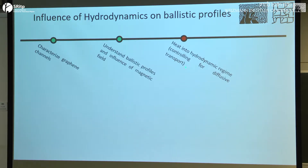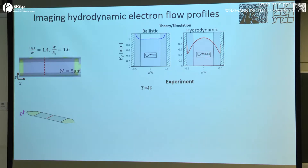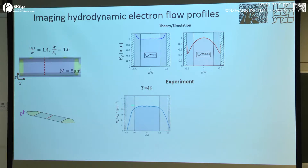Now we're ready to heat into the hydrodynamic regime and see if we actually observe what we expect experimentally. This is the theory for EY — what we actually measure — first at four Kelvin. The parameters are LMR over W equals 1.4, at W over RC equals 1.6. EY looks pretty flat in the channel, and by definition the signal goes to zero at the edge of the channel. For the central part, the point-spread function of our detector is much less than the size of this region, so we can confidently trust the signal there. It matches the theory nicely.